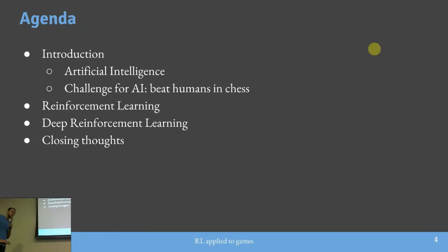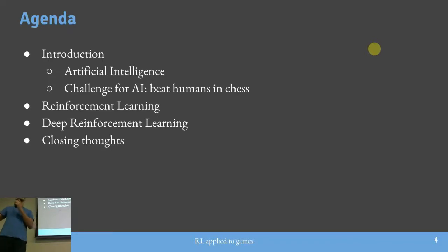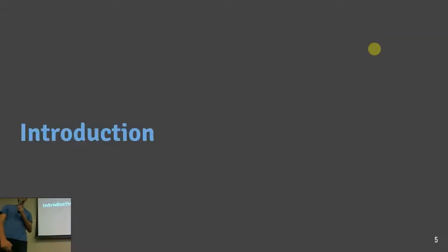A ideia hoje é fazer uma breve recapitulação sobre inteligência artificial e jogos. Depois, a gente vai entrar na área de Reinforcement Learning — vou explicar o que é e por que é importante falar disso quando se fala de jogos. Vamos entrar também na área de Deep Reinforcement Learning, que é uma mistura de Reinforcement Learning com Deep Learning, e teremos um fechamento da apresentação.